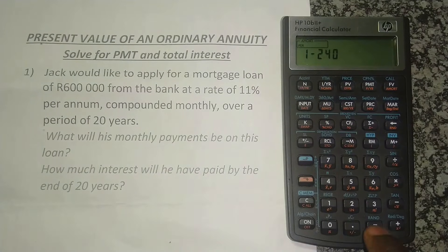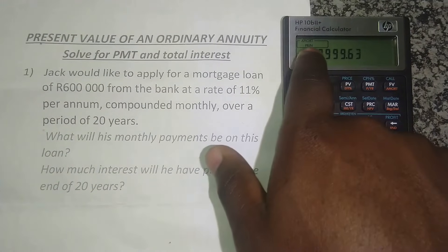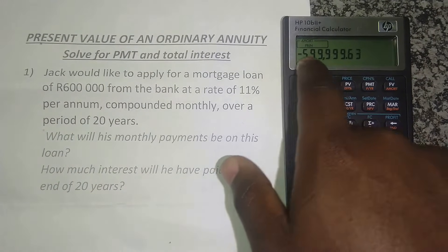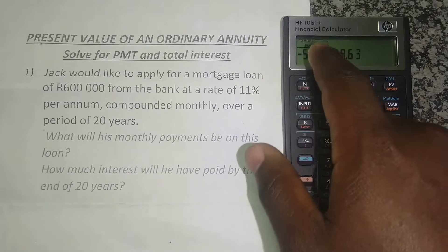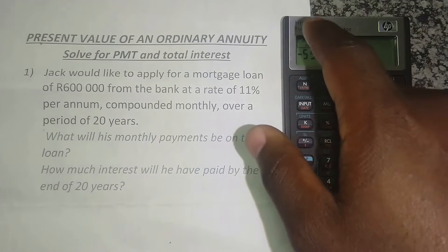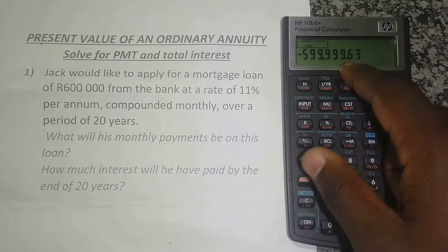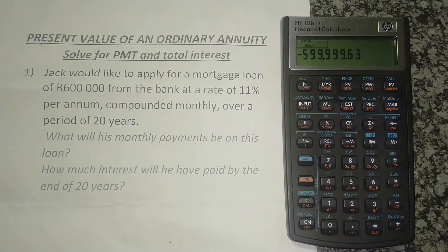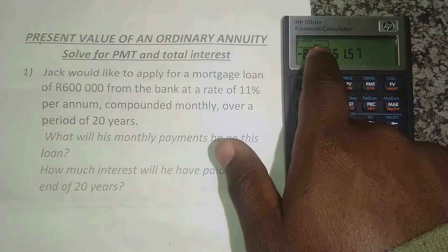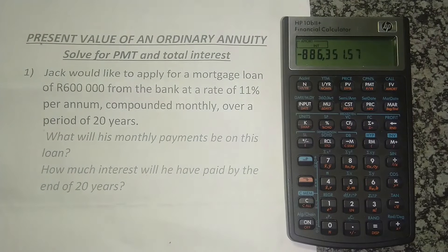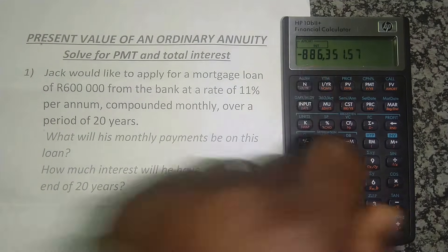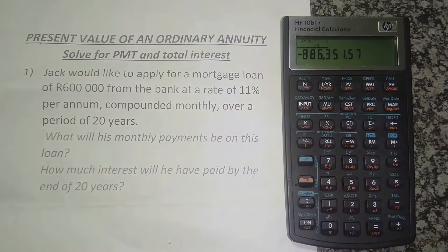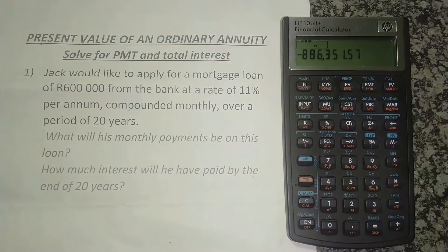Press the equals sign and it shows PRIN — which stands for principle — showing how much you've paid by the end of period 240, or by the end of 20 years. It's 599,999 rand 63 cents, which rounds off to 600,000 — the entire amount paid off. Press equals again and it shows INT, which stands for interest. Look at how much interest you will have paid by the end of 20 years: 896,351 rand 57 cents.